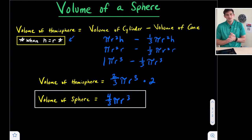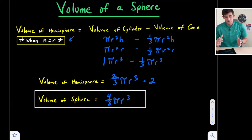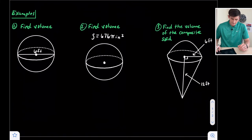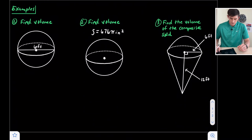And there, ladies and gentlemen, is our equation for the volume of a sphere: four thirds pi r cubed. So now let's use that to do some examples.